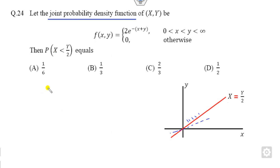Now how you can find this probability - you have to write the integral of f(x,y) dx dy, that's very simple. Over this I can write this as 2e^(-x-y) dx dy.